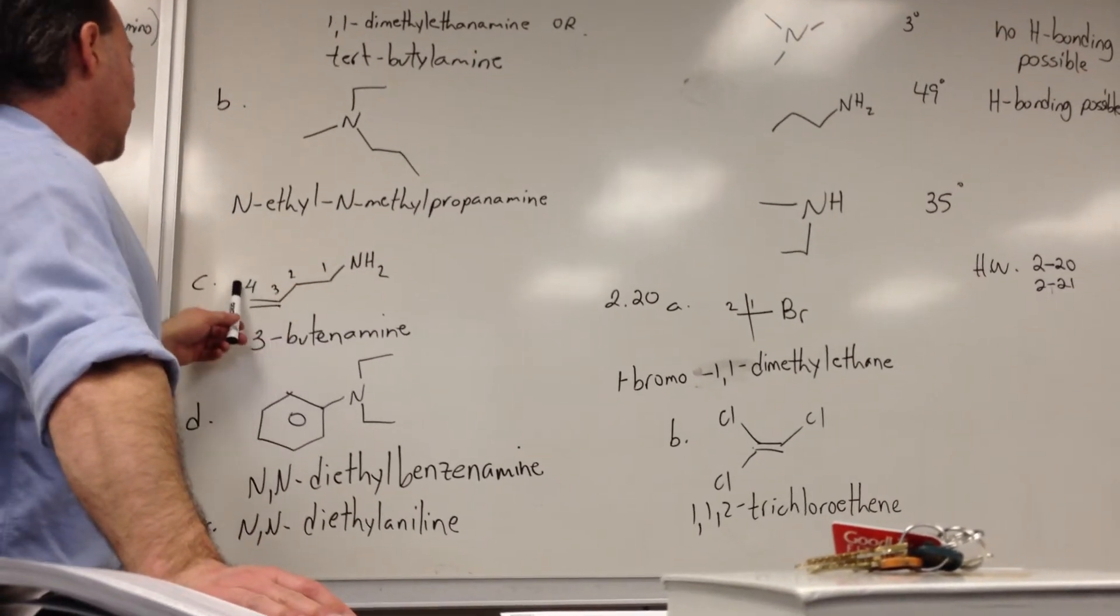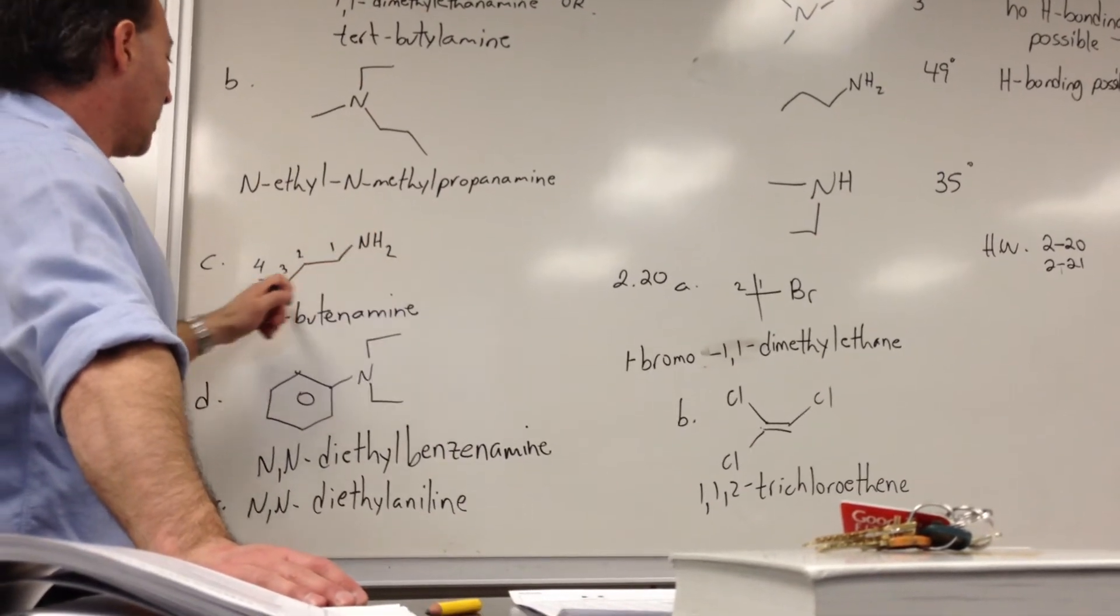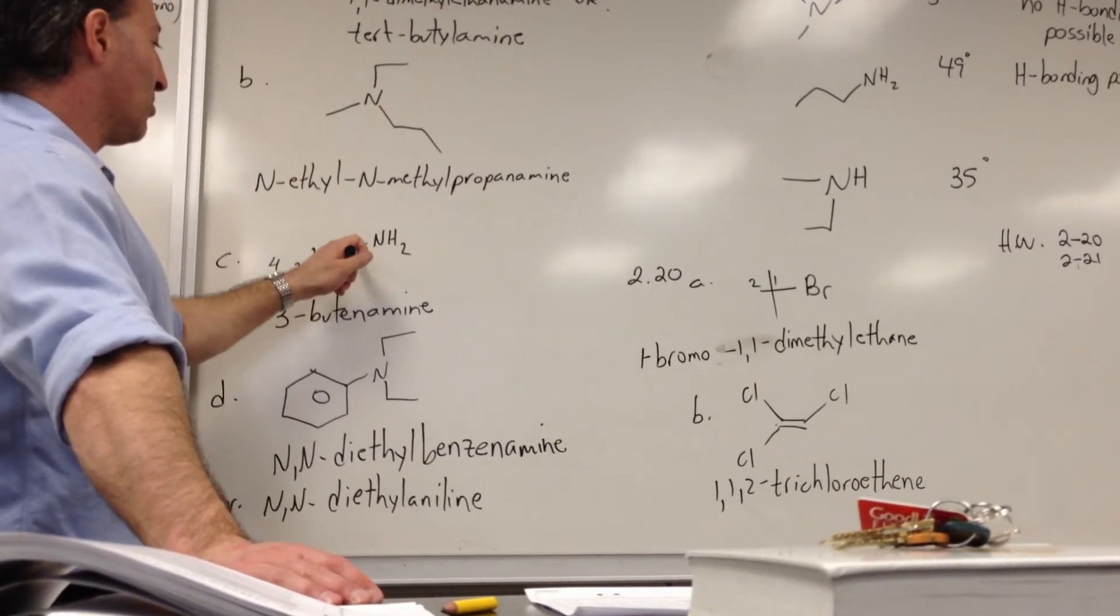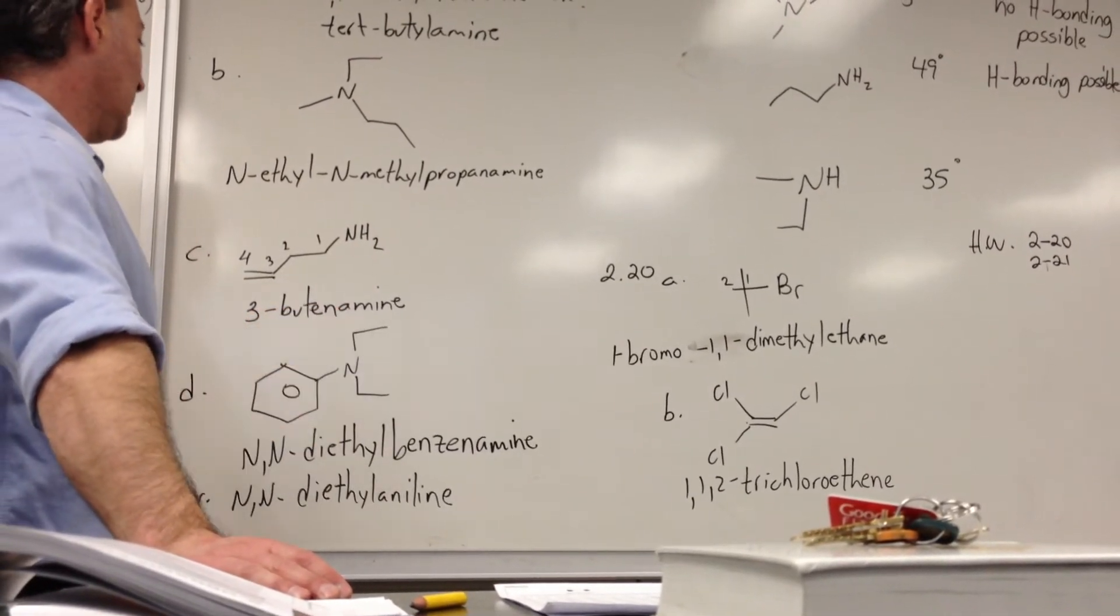Here we have a butene amine attached to an amine group. Amine has higher priority than alkene, so we start the numbering from the first carbon attached to the nitrogen. And we say 3-butene amine.